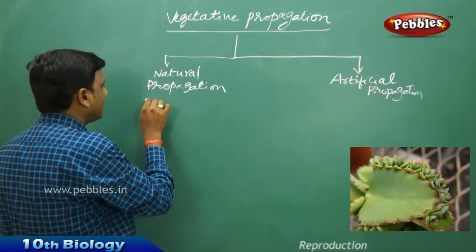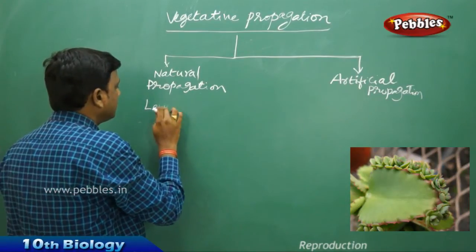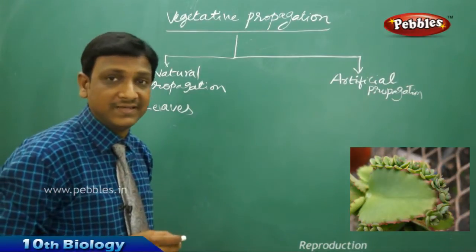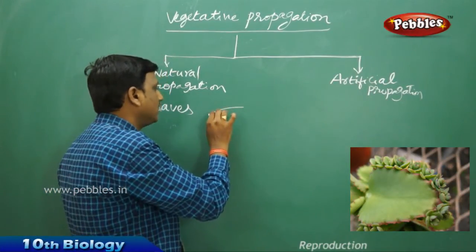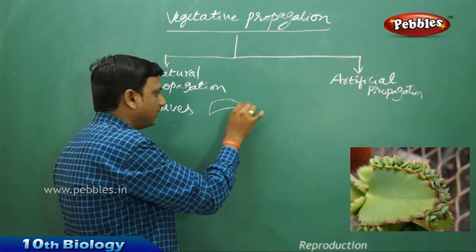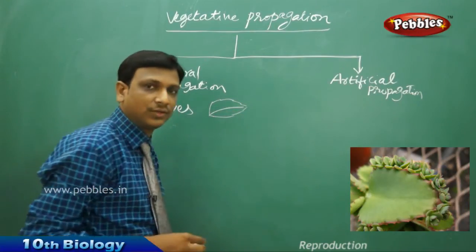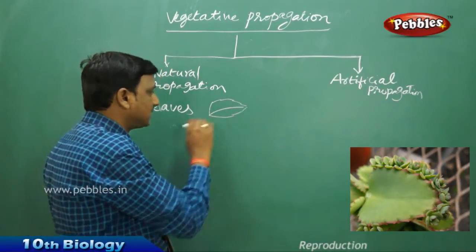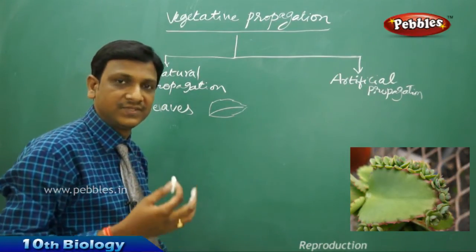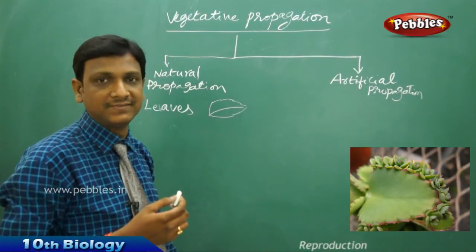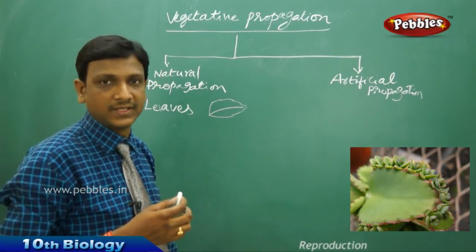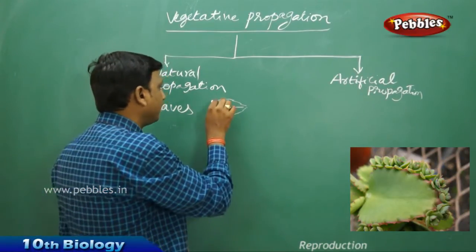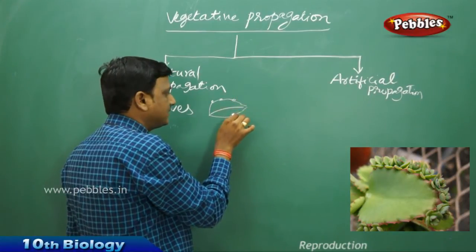Now let us see the natural methods. Looking at vegetative propagation from leaves, the example plant is bryophyllum. Bryophyllum plants are grown in houses as indoor plants. It is a succulent plant, meaning it stores water in its leaves. The leaves are very thick and filled with water. Bryophyllum will have leaf buds on the edges of its leaf.